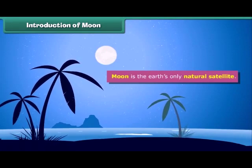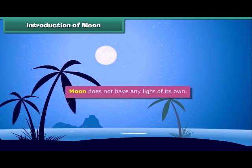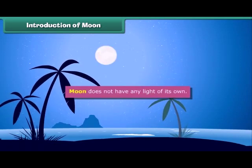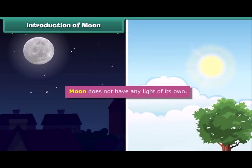The moon does not have any light of its own. The light you see is actually from the Sun reflecting off the surface of the moon. So if the Sun wasn't there, we would not be able to see the moon.